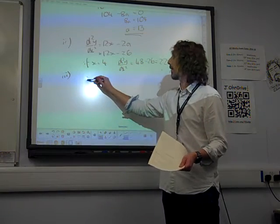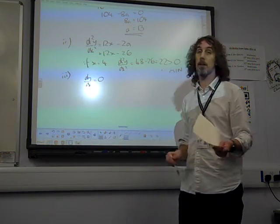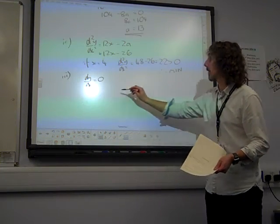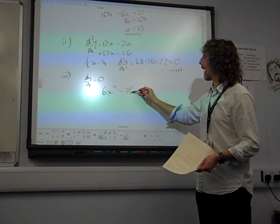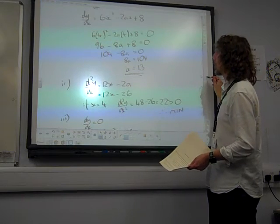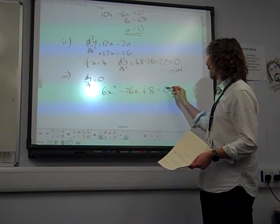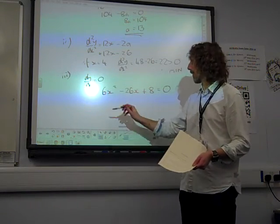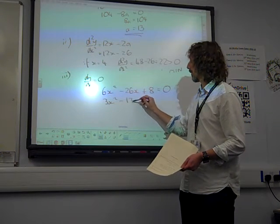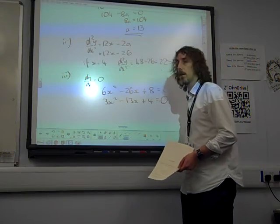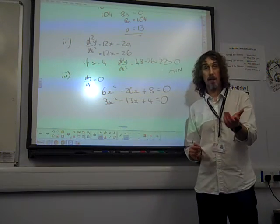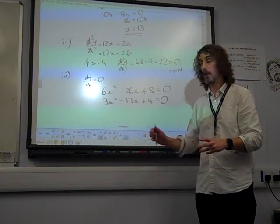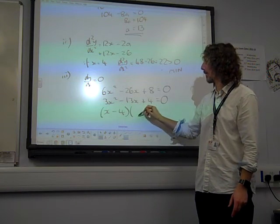Now, at a stationary point, dy by dx is 0, so we again are putting our dy by dx equal to 0. We now know that dy by dx is 6x squared minus 26x, because it was 2ax, plus 8. So that's the equation that we're solving. First things first, I would say that equation, let's divide by 2. And now we can factorize it, but the question has already told us that x equals 4 is the solution to this.